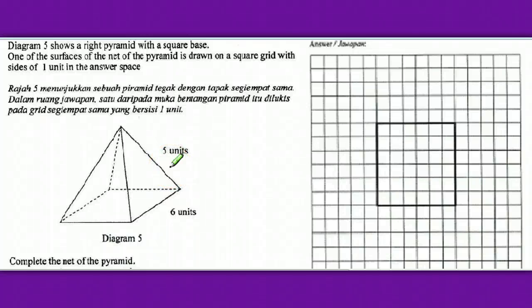Hello, let's try this question on net of a solid geometry. Now here, we have a right pyramid with a square base. How many faces does a pyramid have? Yes, you are right. It has five faces. One square face and four isosceles triangles of the same size. The square face is drawn here and we need to complete the net of the pyramid.